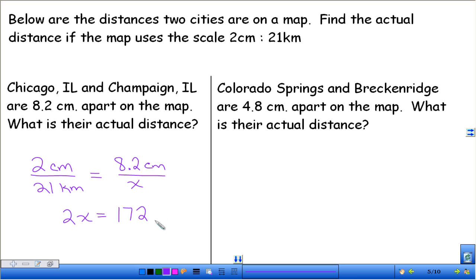When you cross-multiply, you should have gotten 172.2. And go ahead and take a second to divide those both by 2. I didn't actually look up these distances, so if they're not even close, I apologize. So we should have gotten 86.1 kilometers. So their actual distance would be 86.1 kilometers. Again, I don't know if that's even close.